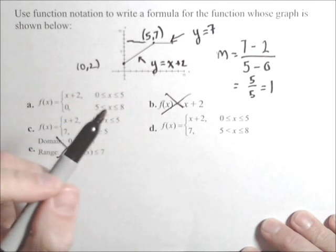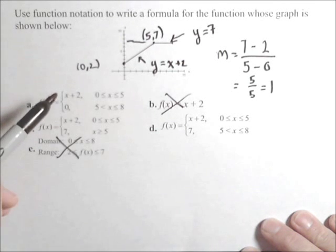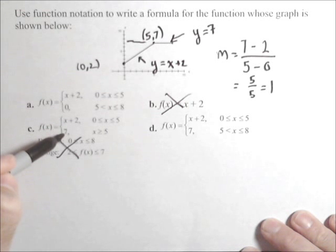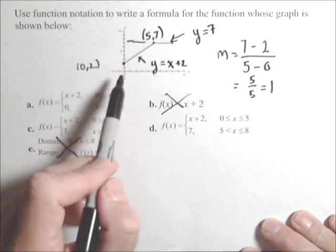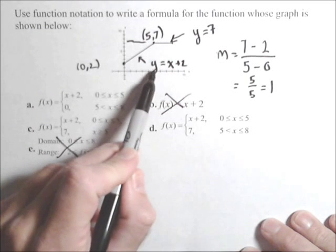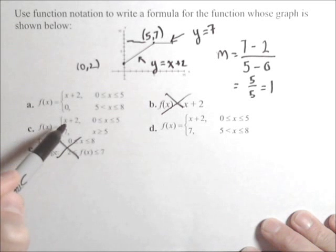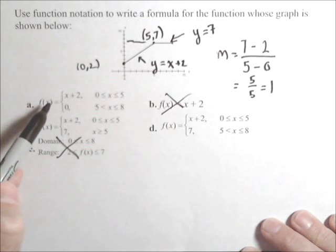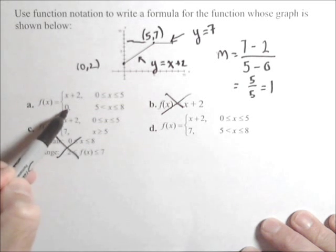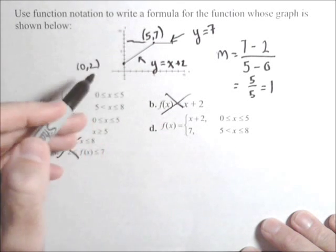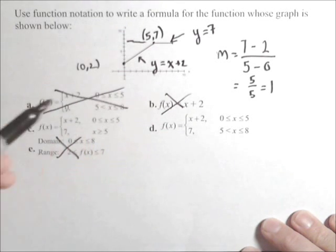So putting these two together, it's going to be x plus 2 and 7, and the only other thing we have to do is identify what parts of the domain. So the x plus 2 goes from 0 to 5. So that actually works for A, C, and D, but notice that A is 0 here. That means the graph would have been down here, so that can be eliminated.